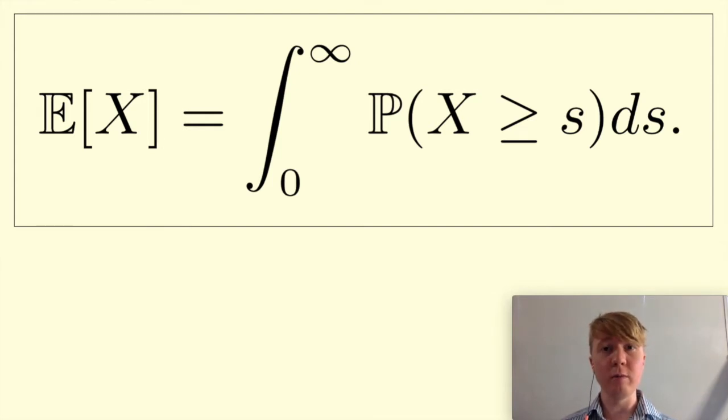If you've seen the case for a discrete random variable, the proof is going to be quite similar here. Basically, we'll write the expectation as an integral using the definition, and we'll write this as two integrals, change the order of integration, then out comes the formula.